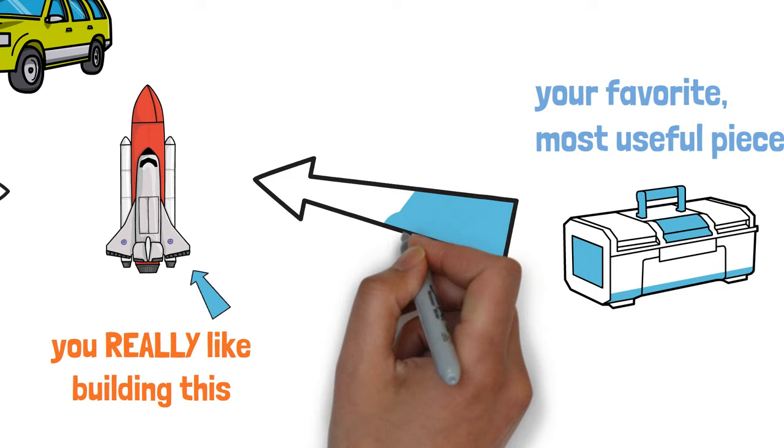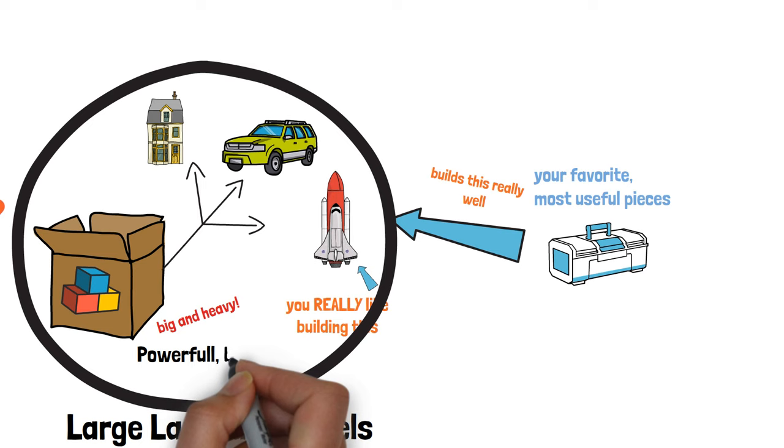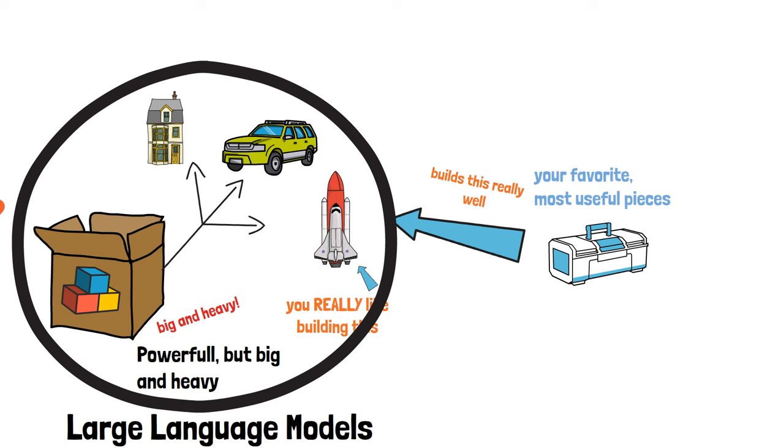In this analogy, the giant box of Legos is like a large language model. For example, GPT-4. It's powerful and can do lots of things, but it's also big and heavy. It requires a lot of computational resources to use.